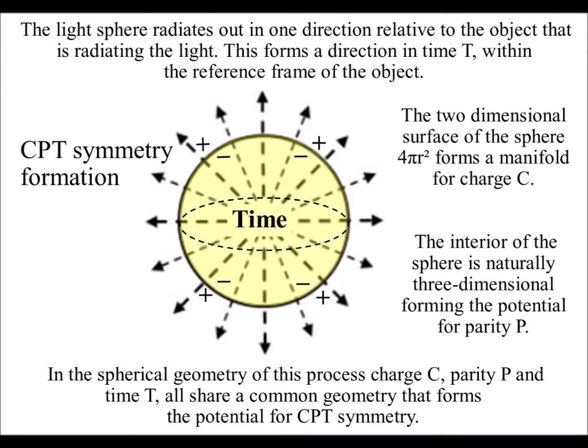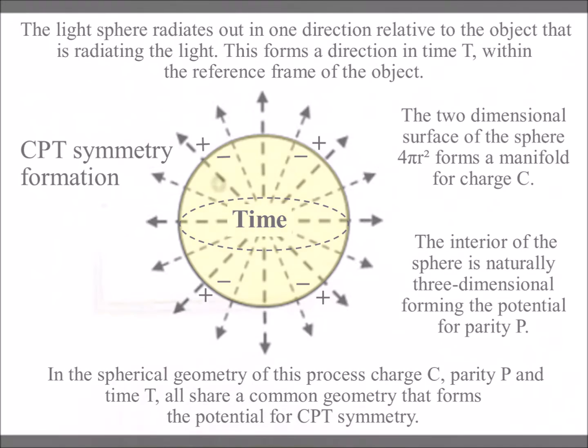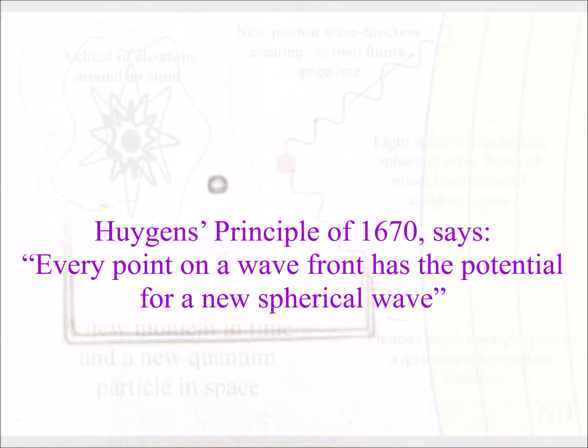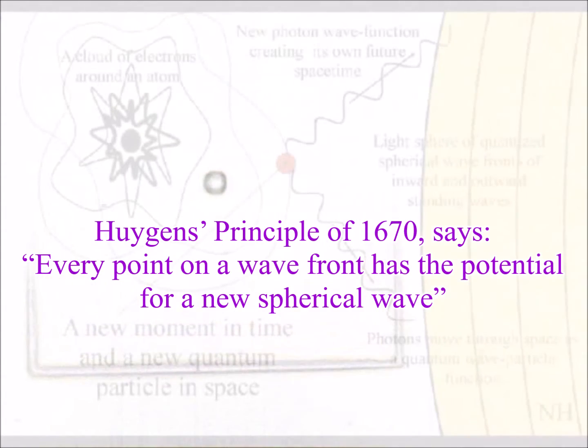The light sphere radiates out in one direction relative to the object that is radiating the light. This forms a direction in time within the reference frame of the object.